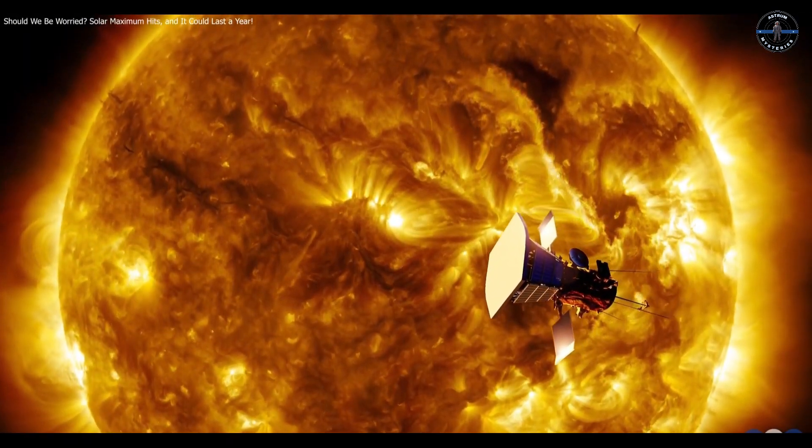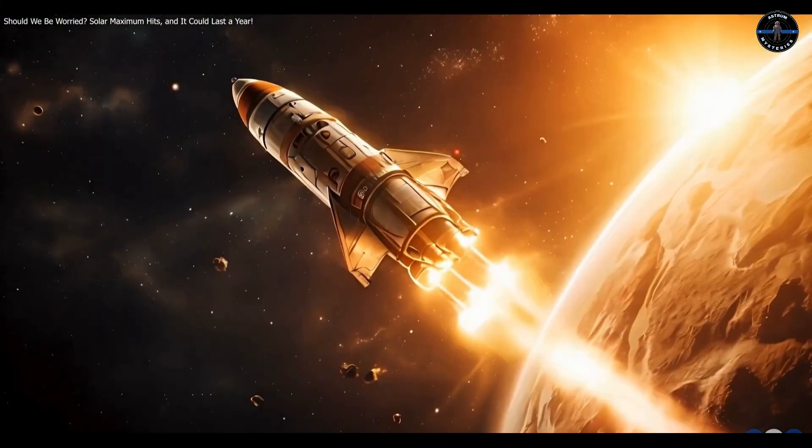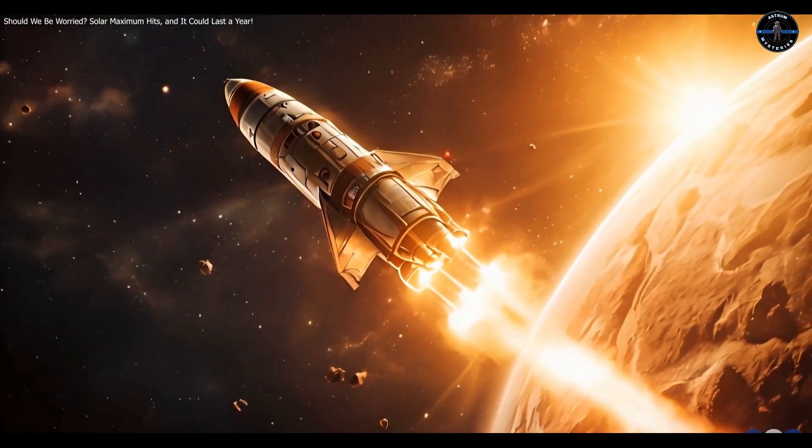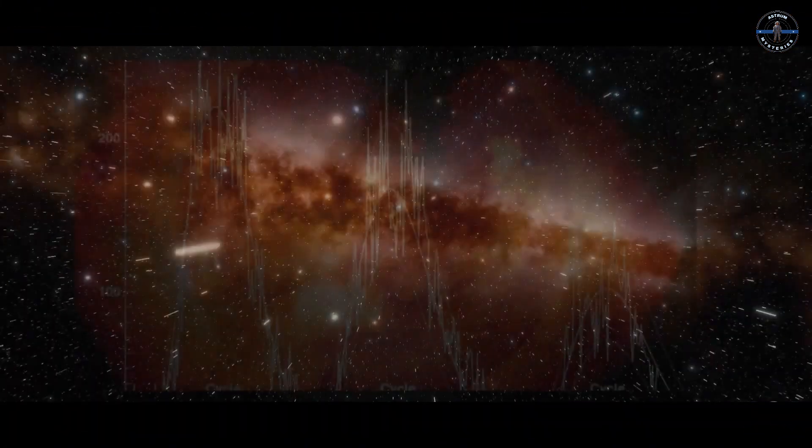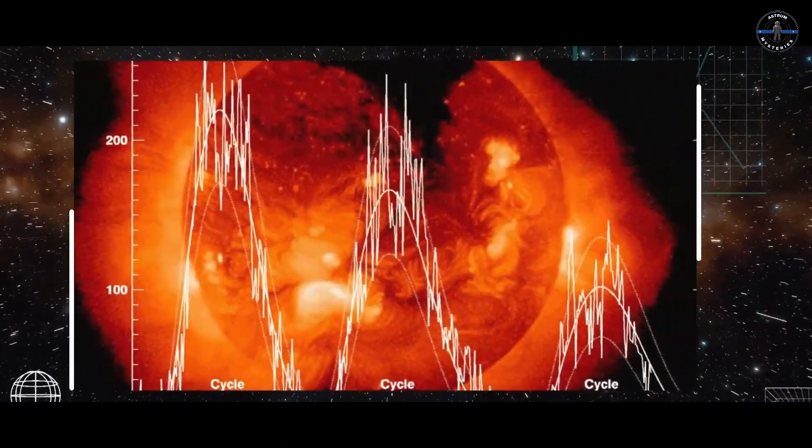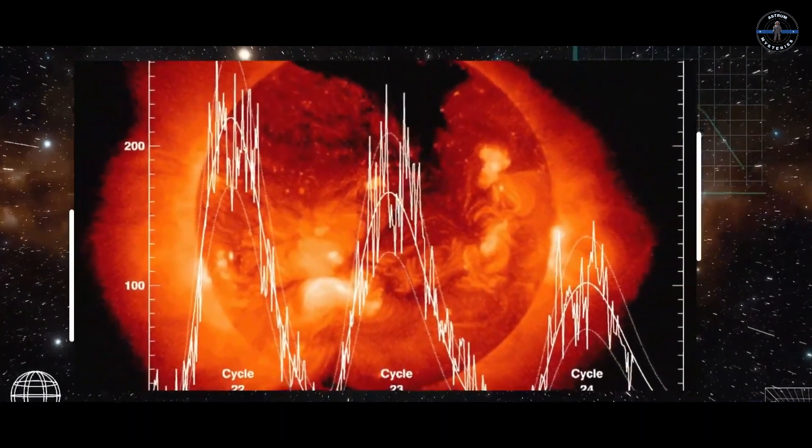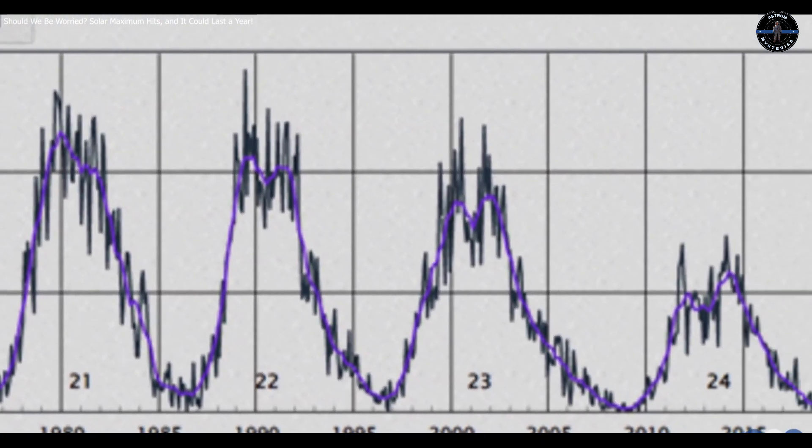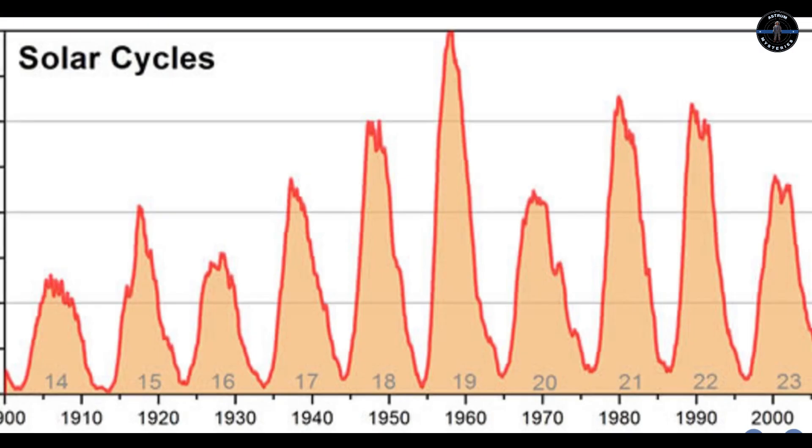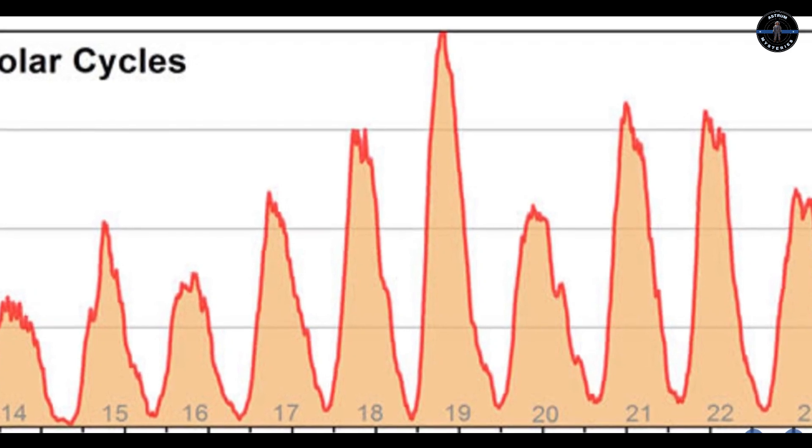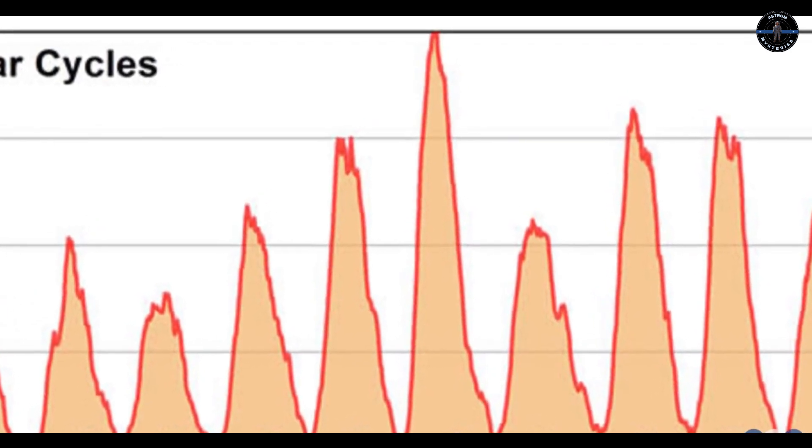For explorers, the solar maximum isn't just a threat, it's an opportunity. NASA's Parker Solar Probe and the European Space Agency's Solar Orbiter are flying closer to the Sun than any spacecraft before, seeking to unlock the secrets of the solar cycle and understand how these massive bursts of energy shape not just our solar system, but our future space exploration.